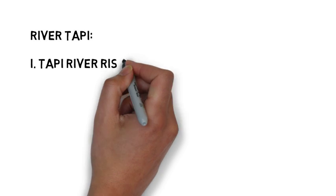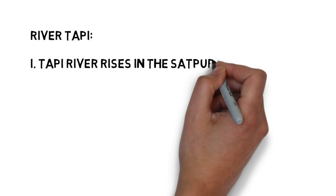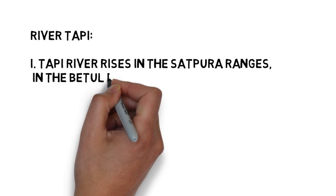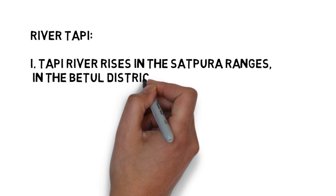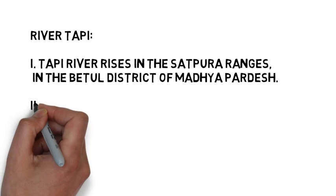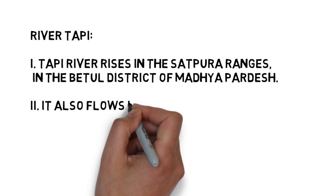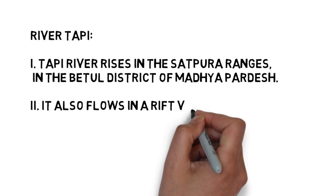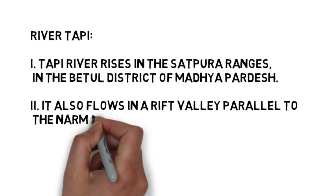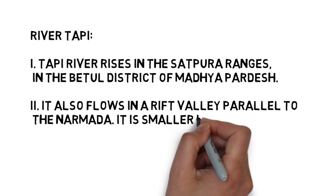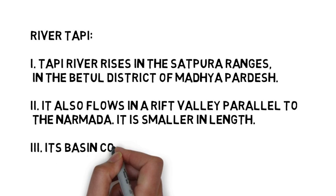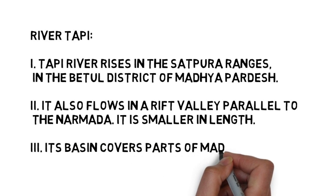The Tapi river is another important westward-flowing river. It originates from Multai in the Betul district of Madhya Pradesh. Nearly 79% of its basin lies in Maharashtra, 15% in Madhya Pradesh, and the remaining 6% in Gujarat. It also flows through a rift valley parallel to the Narmada, but it is smaller in length.